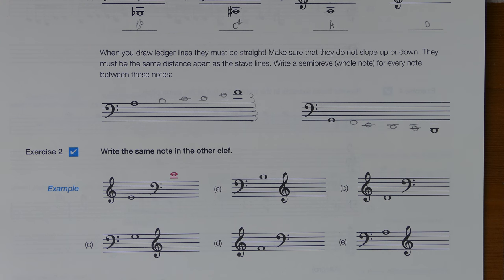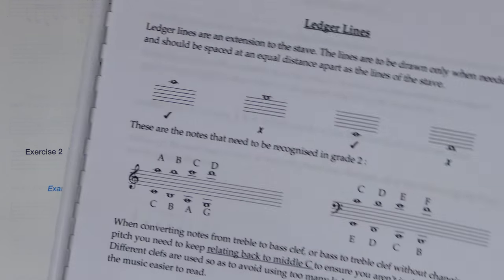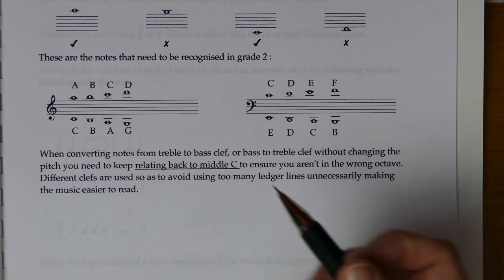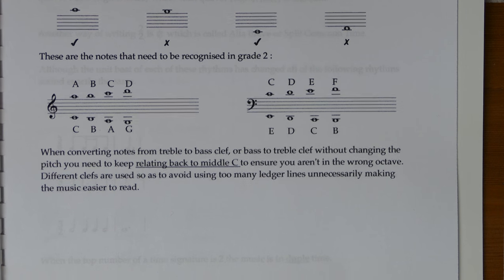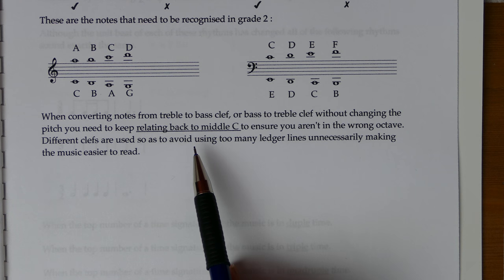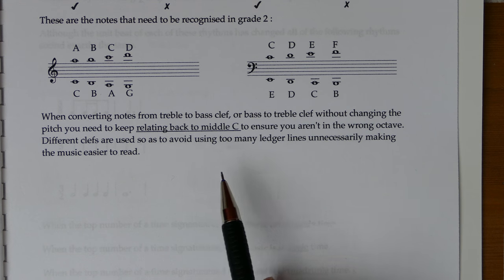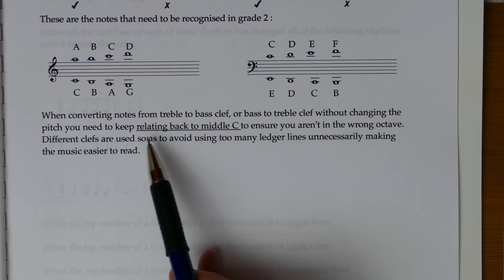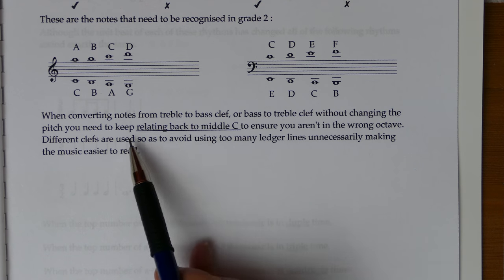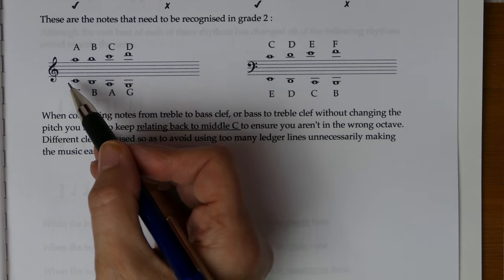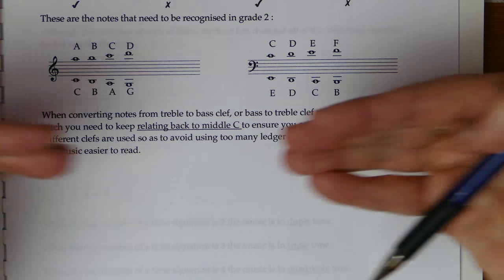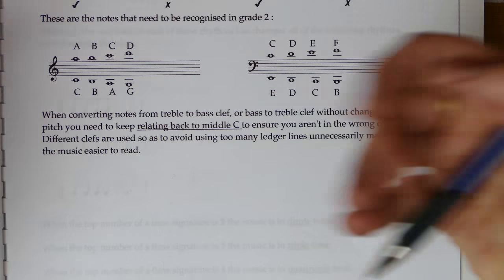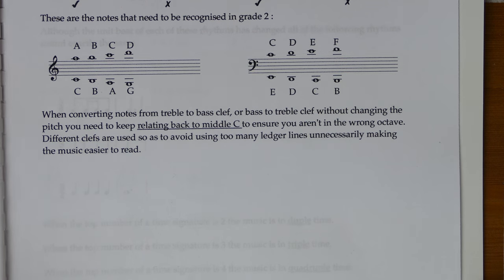We're now writing notes, converting clefs without changing the note at all. Referring to the PDF, these are the notes we've worked on in the first exercise of Section A, and now we're converting from treble to bass or bass to treble without changing the pitch. We've got to be careful we don't end up jumping octaves. The main point is to keep relating back to middle C — remember that middle C is at the bottom of the treble or at the top of the bass, where they meet and overlap. Keep relating back to middle C and you'll be sure not to go wrong.